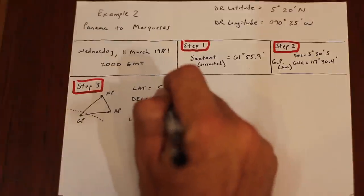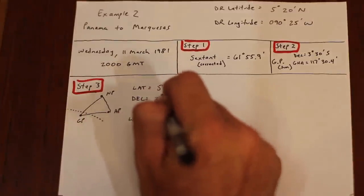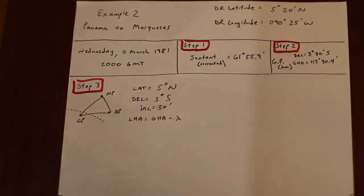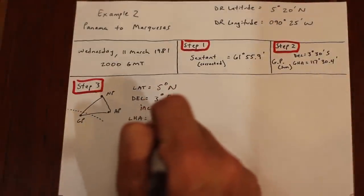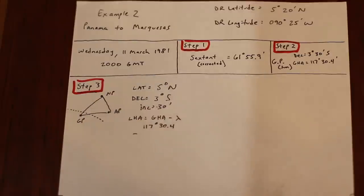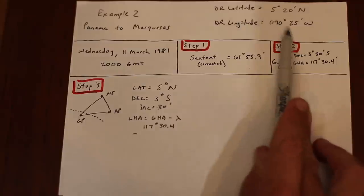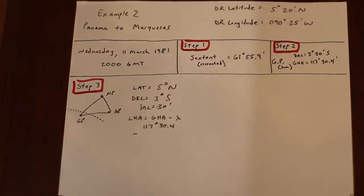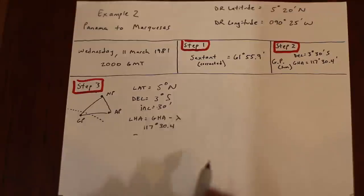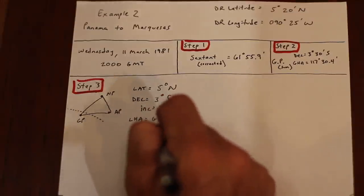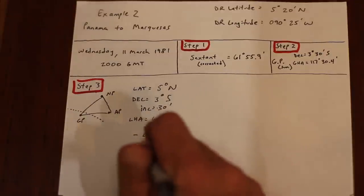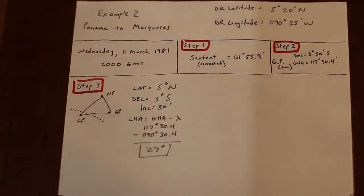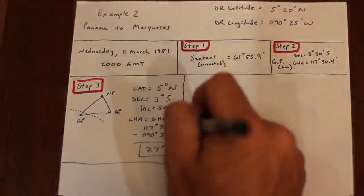Declination. Bummer. In this case, it's not a whole number, so we need to note the whole value in the increments, which we'll account for later. LHA. Again, it's GHA minus longitude, but since the assumed position is arbitrary, we can be a bit more intelligent about this and pick an assumed longitude that, when subtracted from the GHA, yields a whole number. So instead of using our DR longitude, we'll use something close, but that also makes the math easy. Let's pick 90 degrees and 30.4 minutes. Now the LHA is 27 whole degrees. Awesome.